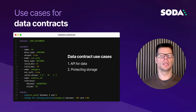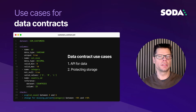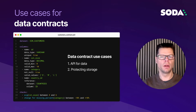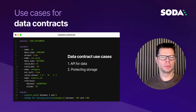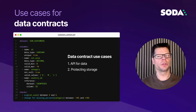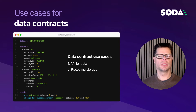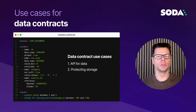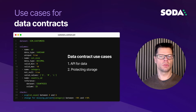Each time new data gets produced, it is verified against the contract — this is called enforcement. Enforcement is most powerful when combined with the circuit breaker pattern, which ensures that data not complying with the contract is not stored and therefore not made available to consumers. That's real prevention and it increases trust in data.